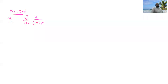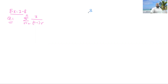Now we have to find the sum of this rational series from two to n in terms of n. Before we try to find the sum, we have to write the partial fractions for 3 over (r-1)(r).